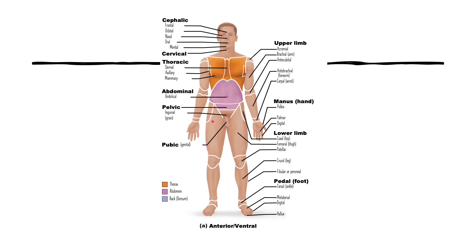For the lower limb: the femoral region corresponds to the thigh, named after the femur bone. The patellar region is the knee area, named after the kneecap bone, the patella. The fibular or peroneal region is the side of the leg where the fibula is found. The tarsal region is the ankle area — those bones are called tarsal bones — and the metatarsals connect to them. We'll cover these further in the skeletal portion.